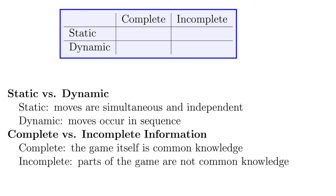Games of incomplete information are those in which aspects of the game itself are not common knowledge. We begin our study of static games of incomplete information by considering how to represent such games. We'll begin with the definition of the normal form of a static game of incomplete information. As in static games of complete information, the normal form tells us players and payoff functions. However, in order to introduce incomplete information, the normal form of a static game of incomplete information tells us players' types, actions, and beliefs.